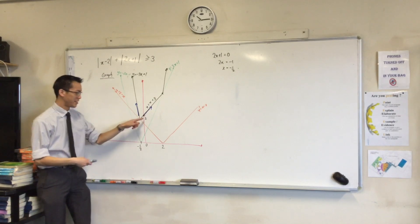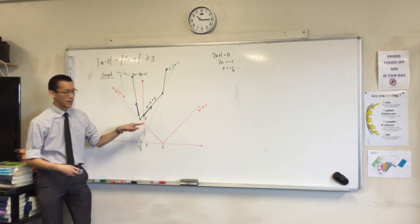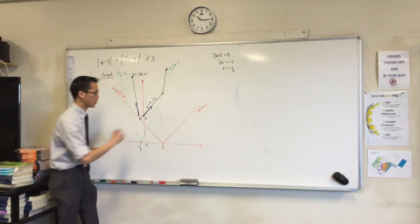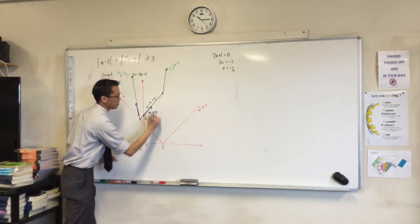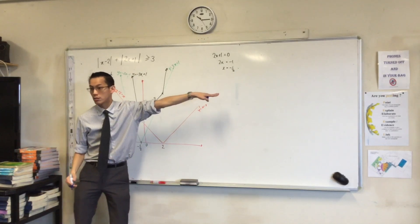Now, conveniently, this has landed on the y-intercept. Right? So, that's where x equals 0. So, this is just going to be x is greater than or equal to 0. That will give me all those values.